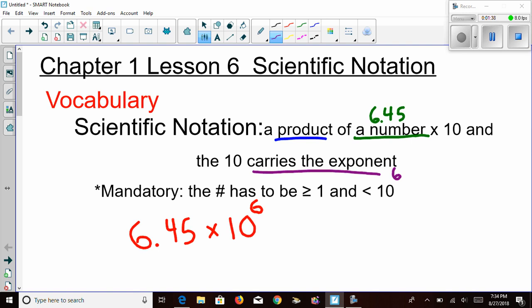Now, there's a part here I did not read. It says mandatory, meaning this has to be one of the steps you follow, is that the number has to be greater than or equal to 1 and less than 10. Now, let's look at the number 6.45. Can we agree that 6.45 is greater than or equal to 1? Can we agree that 6.45 is less than 10?